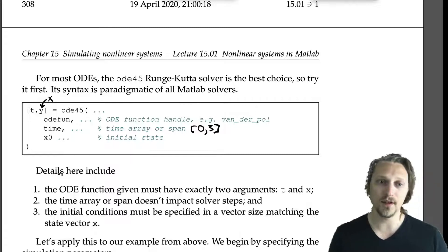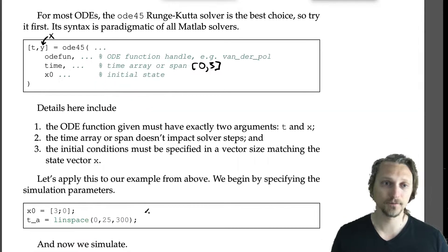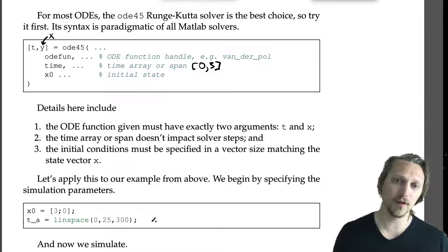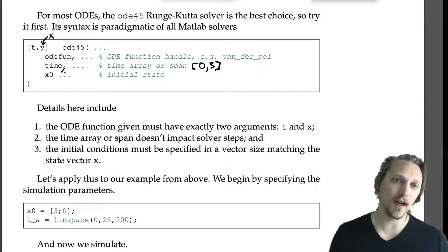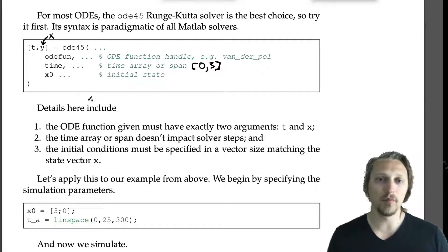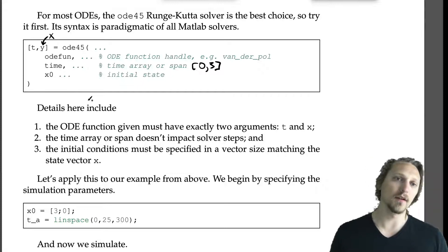Details here include: the ODE function given must have exactly two arguments, t and x; the time array or span doesn't impact solver steps, so you could give it a time array that has specific time steps in it, but it's going to completely ignore those. In the end, it'll do its solving using whatever time steps it thinks are best adaptively, and then it will return the output values at whatever time array you specified.